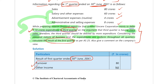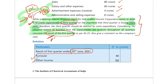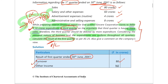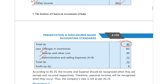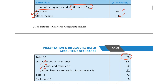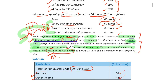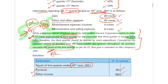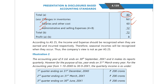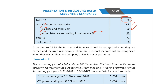They have incurred this 10 crore expenditure in quarter one itself but want to defer it to quarter three. This is not acceptable — you should not defer any expenditure incurred in a particular quarter. So the result: turnover is 80 crores, no other income, total revenue 80 crores. Salary and other expenses 60 crores, advertisement and admin expenses 4 plus 8 = 12 crores, total expenses 72 crores.